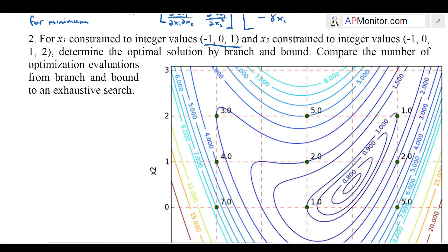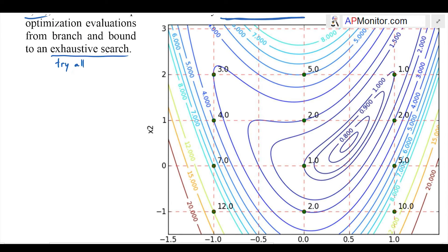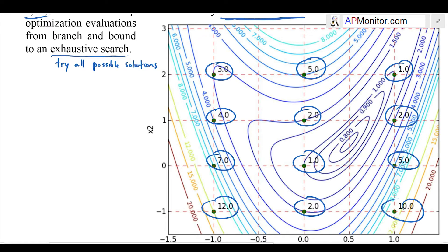Now we're going to go on to the second part of this and consider only integer solutions and use branch and bound. First of all, just look at the exhaustive search, meaning try all of the different points. There you can see the objective function at all of the different integer values.